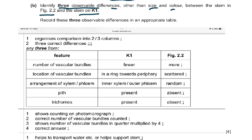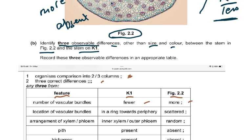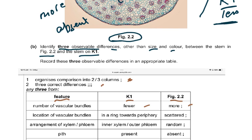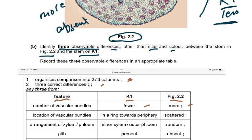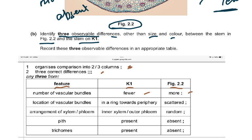The mark scheme expects the comparison organised into two or three columns, then three correct differences. Feature: number of vascular bundles — K1: fewer, figure 2.2: more. Location of vascular bundles — K1: in a ring towards the periphery, figure 2.2: scattered. Arrangement of xylem and phloem — K1: inner xylem outer phloem, figure 2.2: random. Pith — K1: present, figure 2.2: absent. Trichomes — K1: present, figure 2.2: absent. That was the table expected.